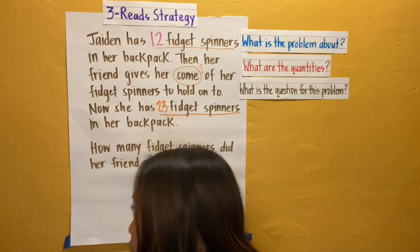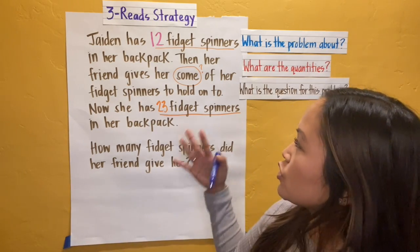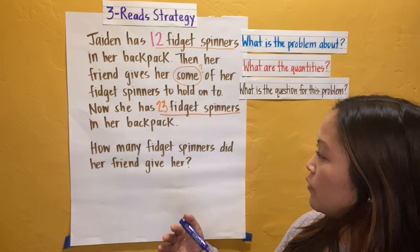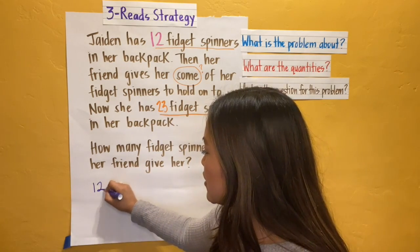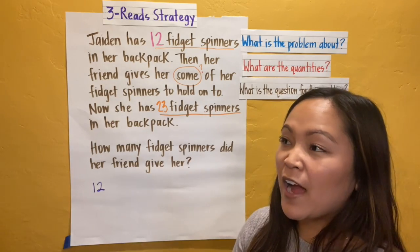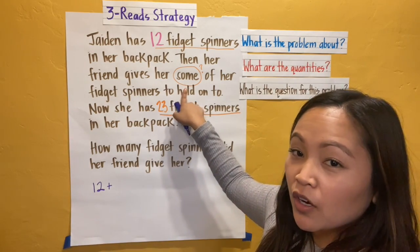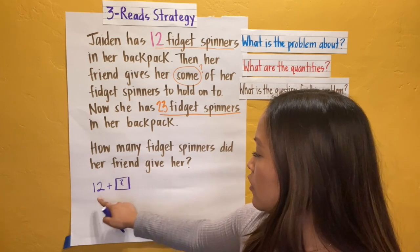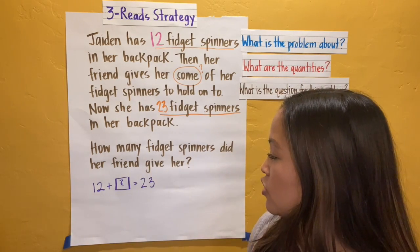I like to read the problem again to myself and then start drawing my answers. Jaden has 12 fidget spinners in her backpack. Then her friend gives her some of her fidget spinners to hold on to. Now she has 23 fidget spinners in her backpack. So I know Jaden started off with 12 fidget spinners, then her friend gave her some more. So it's 12 plus a box — because we don't know how much 'some' is — equals 23. I started with 12, got some more, and now I have 23.